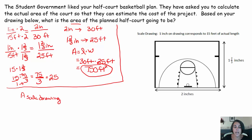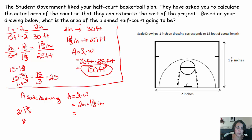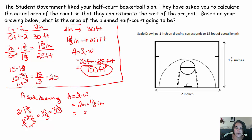So I find the area of the scale drawing: area equals length times width, which is two inches times one and two thirds inches. Two times one and two thirds is two times five thirds, giving ten thirds. Rewriting that, three goes into ten three times with one left over, so that's three and one third square inches — the area of my scale drawing.